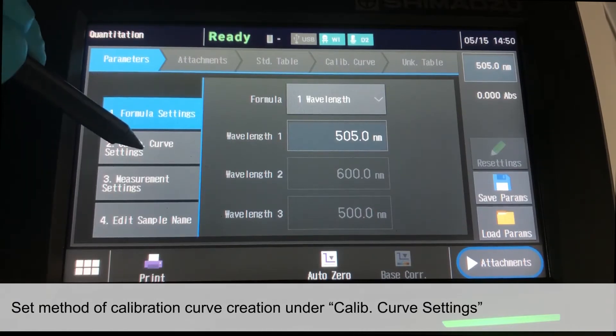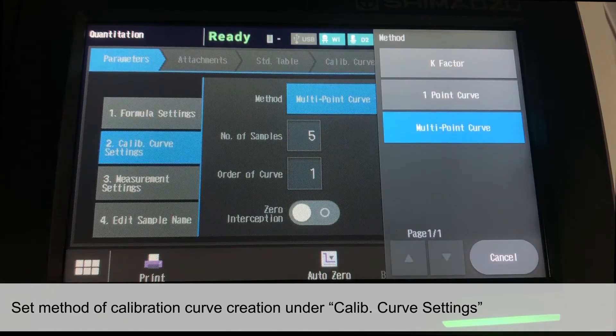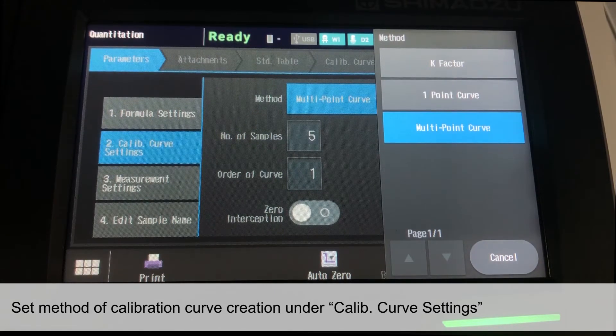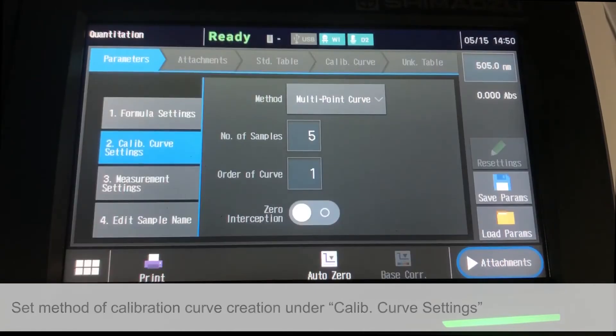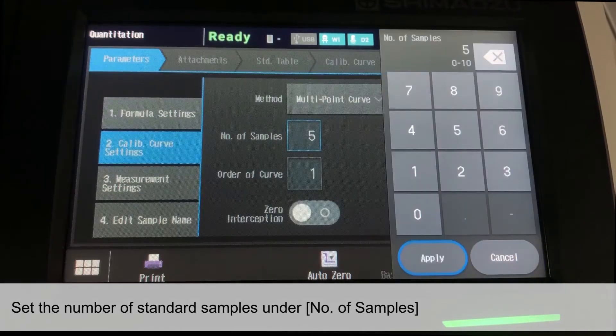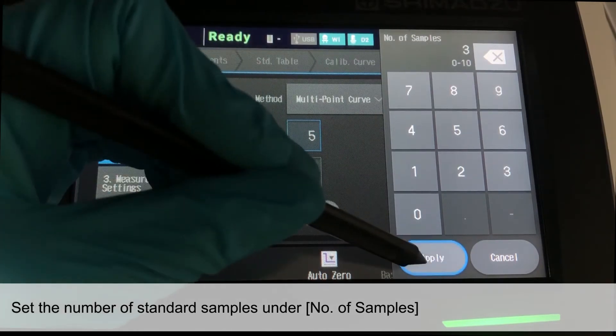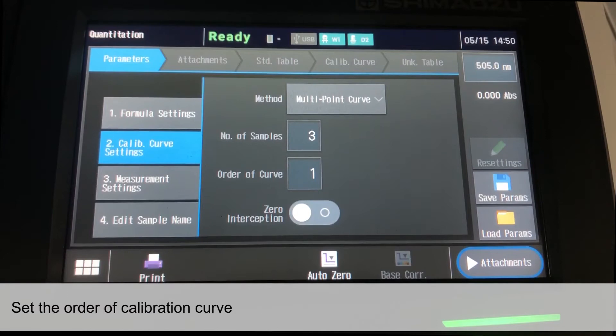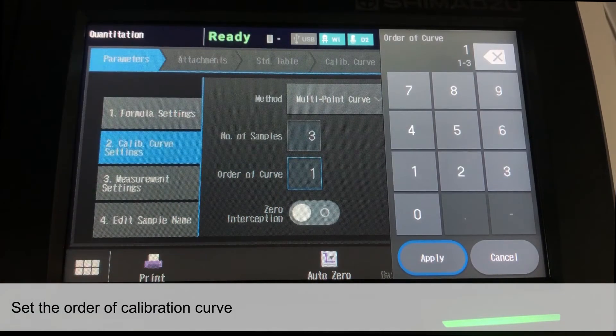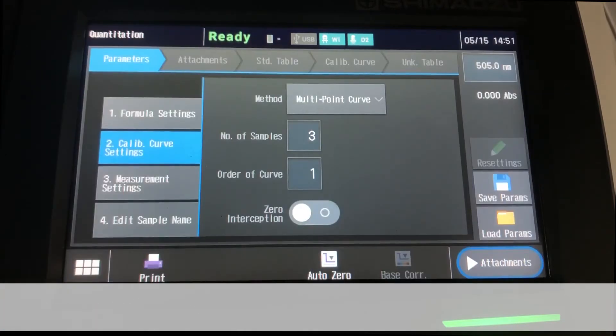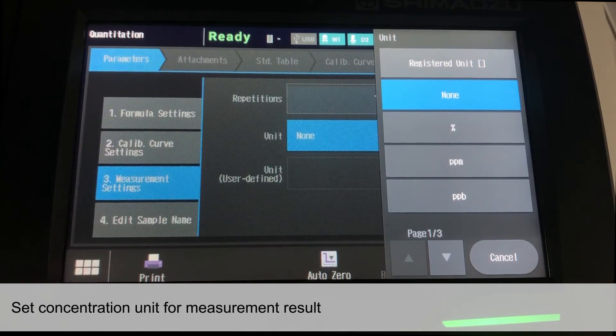Under Calibration curve settings tab, set the method of calibration curve creation. Normally, multipoint curve method is used, so this is used as an example. Set the number of standard samples for calibration curve creation under Number of samples. Set the order of calibration curve. One is selected which represents a linear curve. Select the concentration unit for measurement result.